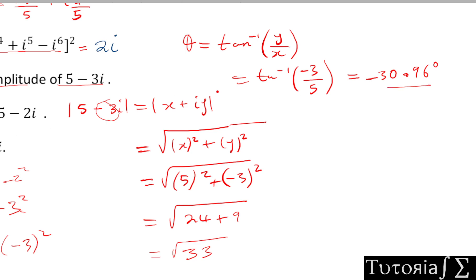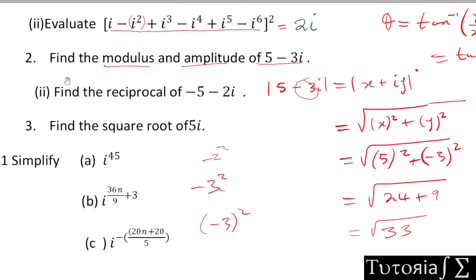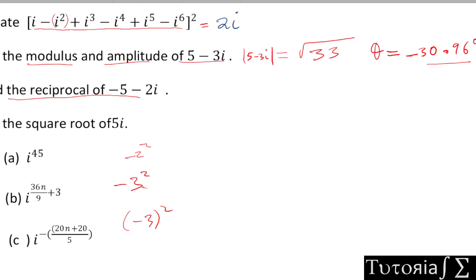For question 2.2, find the reciprocal of (-5 - 2i). The reciprocal of z is simply 1/z, which equals 1/(-5 - 2i). To separate into real and imaginary parts, we introduce the conjugate of the denominator, which is (-5 + 2i), and multiply both top and bottom by it.